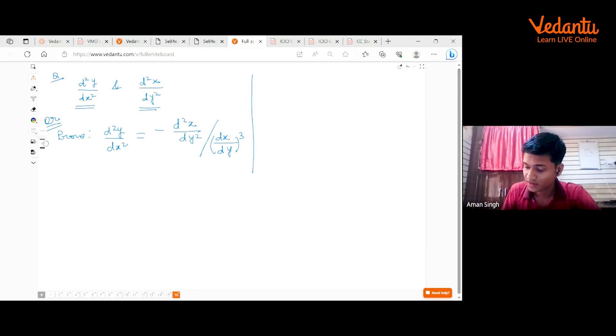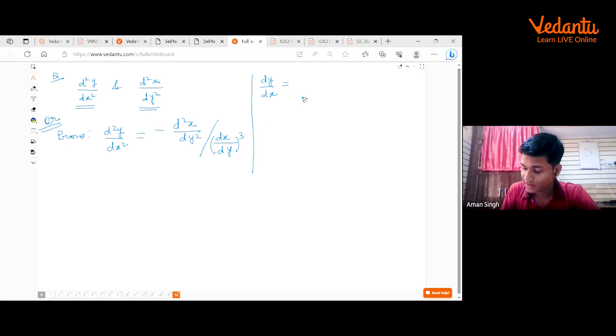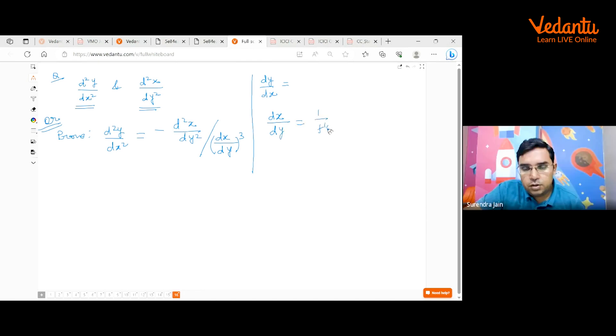Can you please tell how you have done it for whole square? Sir, if the function is Y, then dy/dx is its derivative. And dx/dy will be 1 upon f'(x). Then if we differentiate again, then d²x/dy² is equal to minus 1 upon f'(x) square.